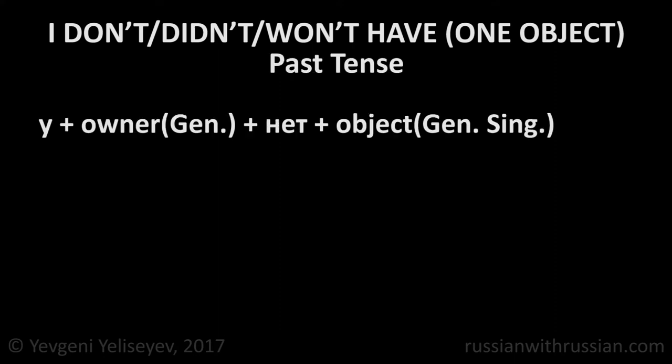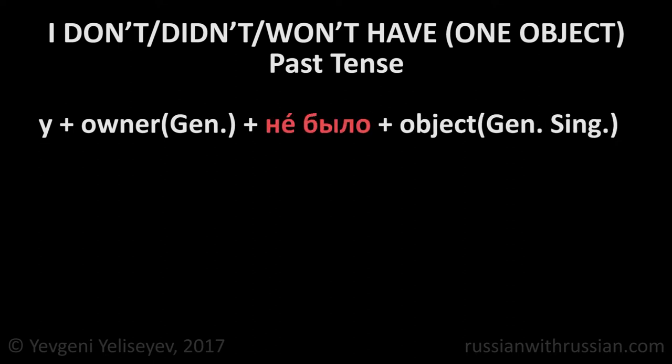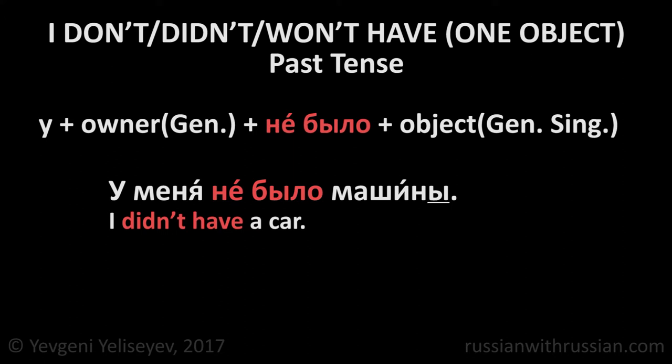In order to say the same thing in the past tense, it's necessary to replace НЕТ with НЕБЫЛО. У меня не было машины. I didn't have a car. Please note that the stress falls on the particle НЕ, and the word БЫЛО becomes unstressed — НЕБЫЛО. As we will see a little bit later, in sentences like these we always use the form of the neuter gender, было, regardless of the object's gender.